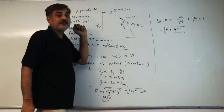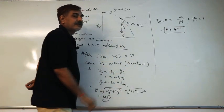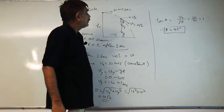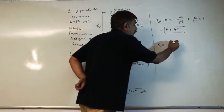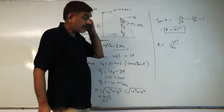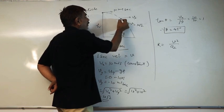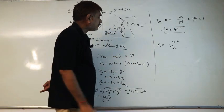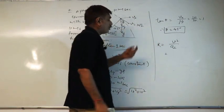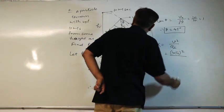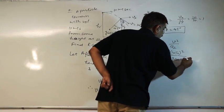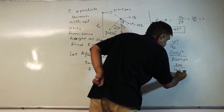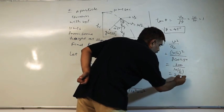Now, the acceleration g acts vertically downward. We resolve g along the direction perpendicular to the velocity. Since θ = 45°, the perpendicular component of acceleration is g cos 45°. Applying the formula: R = V² / a_perpendicular = (10√2)² / (g cos 45°) = 200 / (10/√2) = 20√2 m. This is the radius of curvature after 1 second.